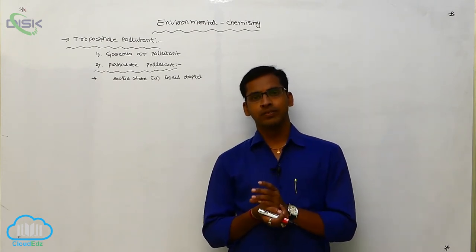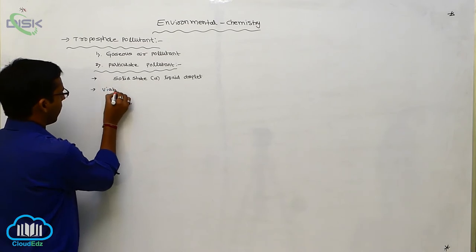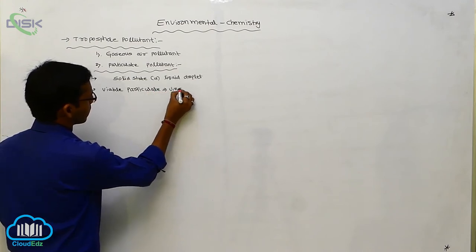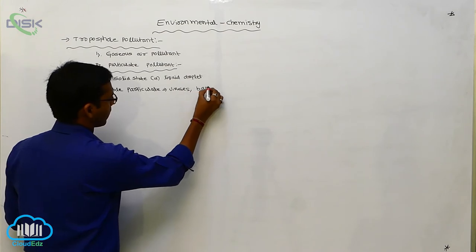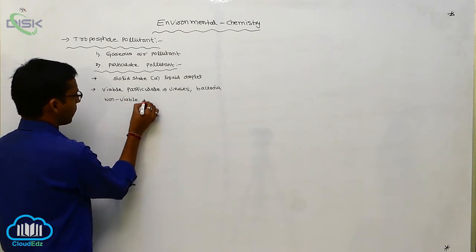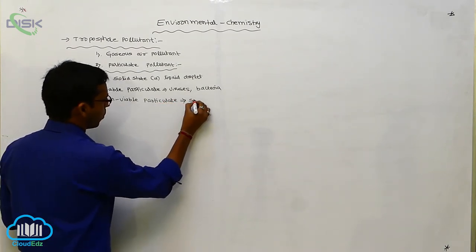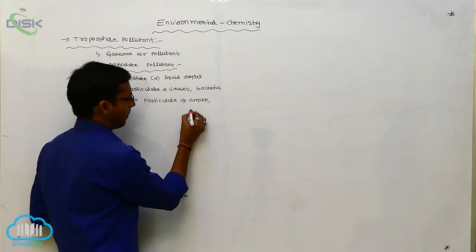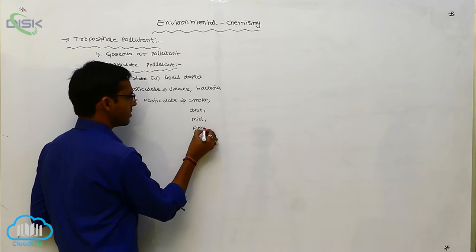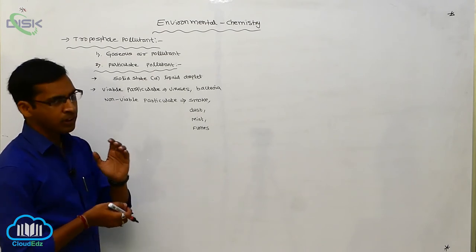The viable particulate may be a virus. The non-viable particulates are smoke, dust, mist, and fumes. So viable particulates and non-viable particulates are the pollutants of the troposphere.